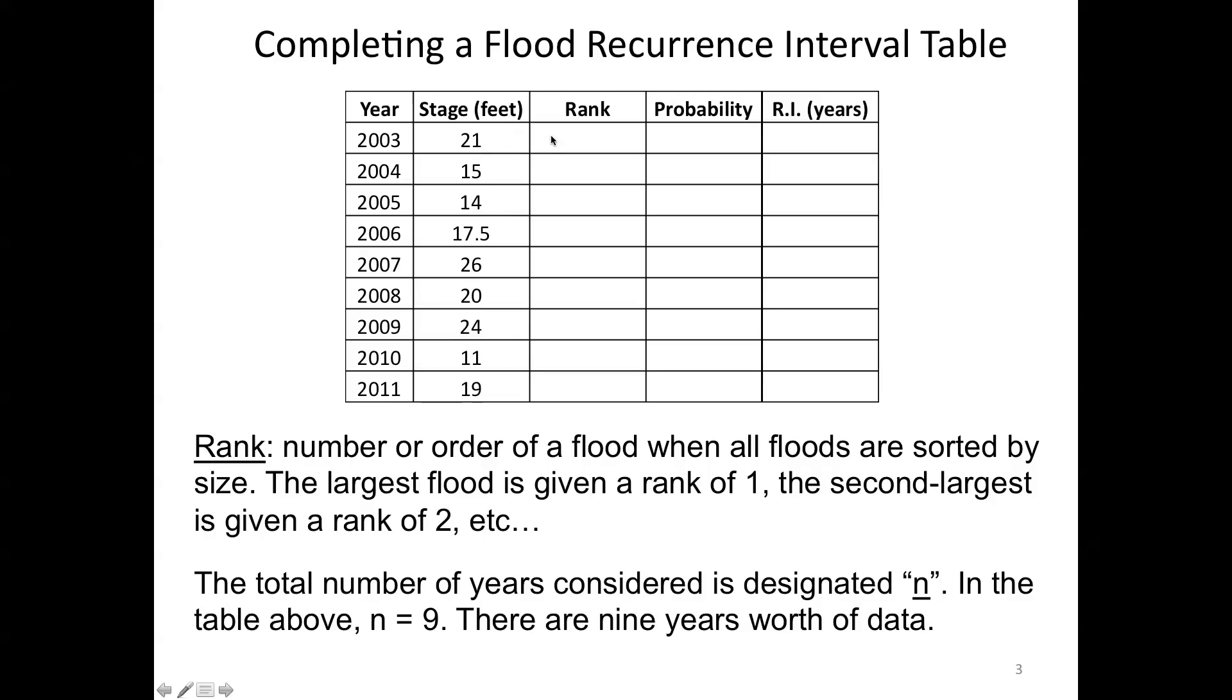The largest will have a rank of one, the smallest will have a rank of nine in this case, because we have nine years of data. And when we work with these things, we're going to do a few simple calculations. One of those calculations requires us to know the total number of years, which we're just going to designate as n. And so in this case, we have nine years of data, so n equals nine.